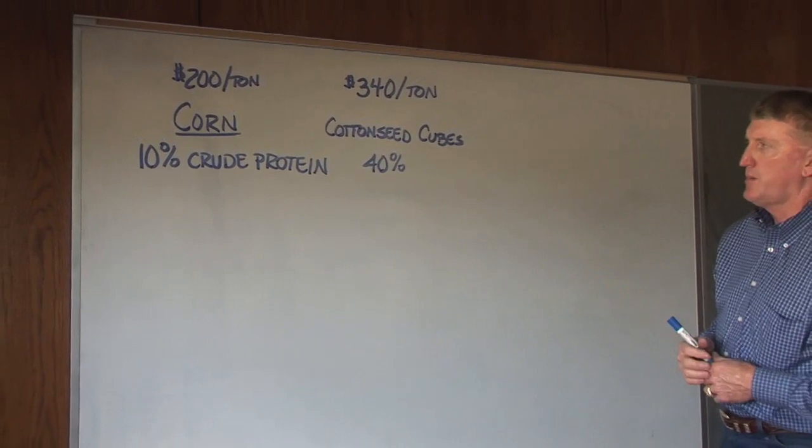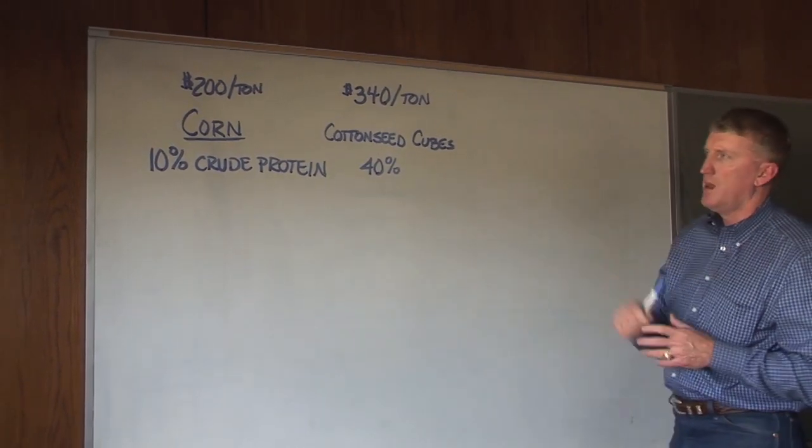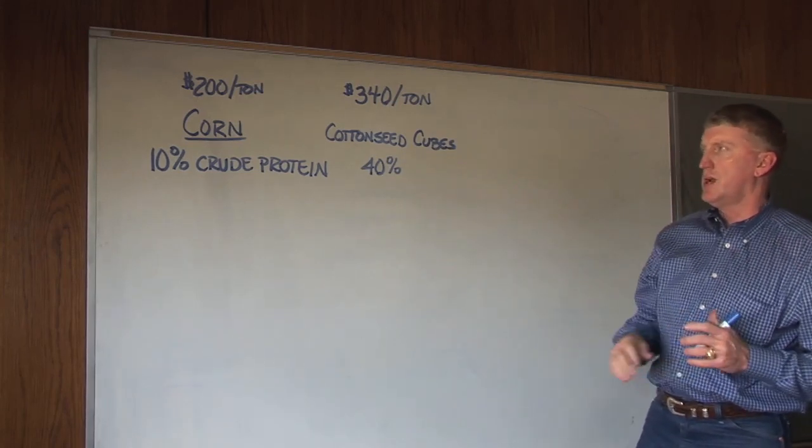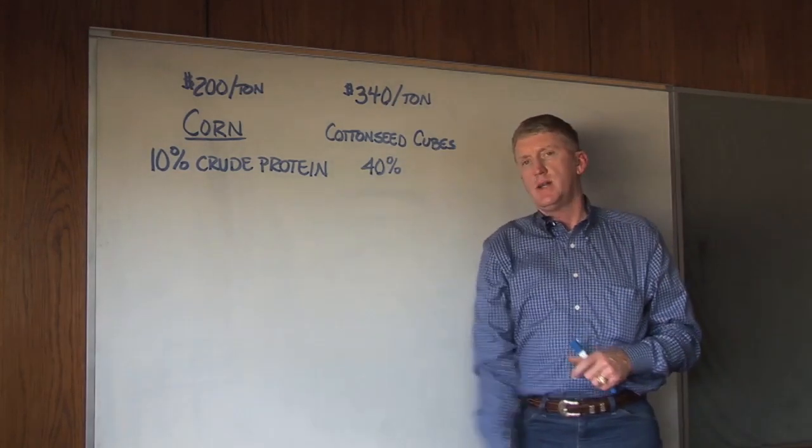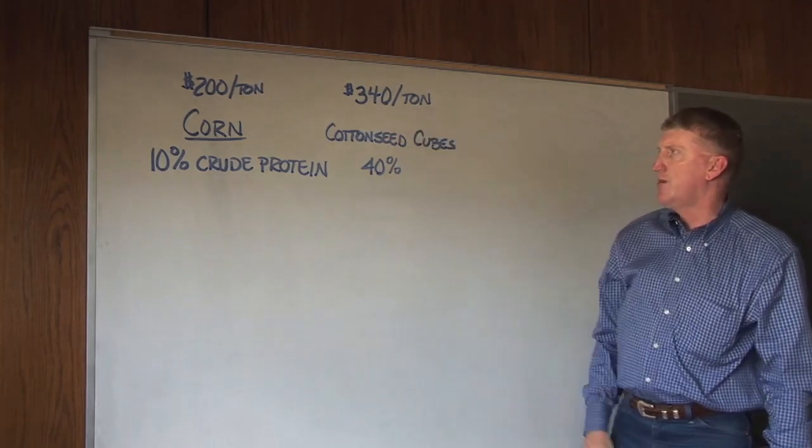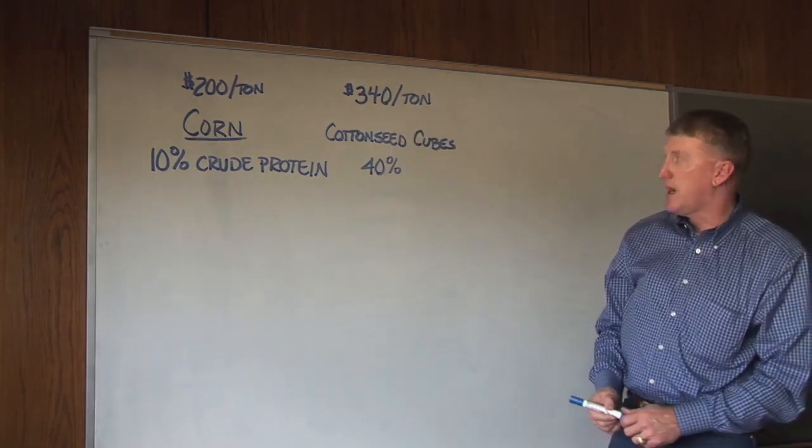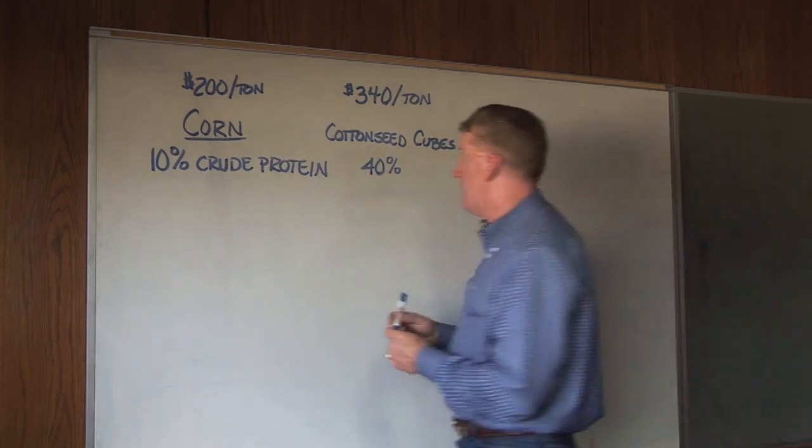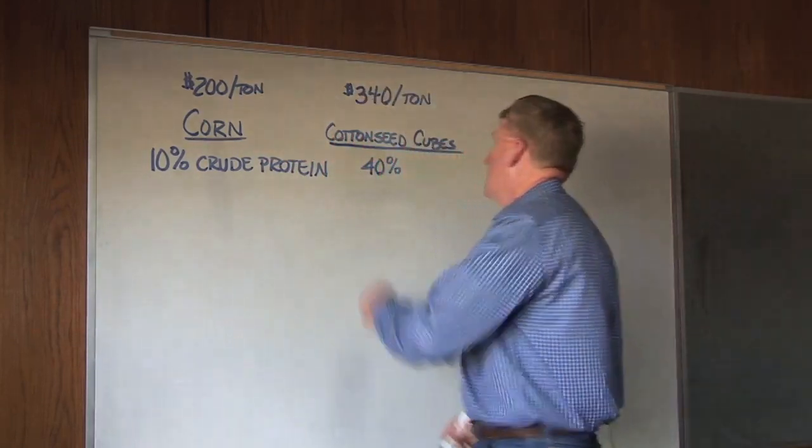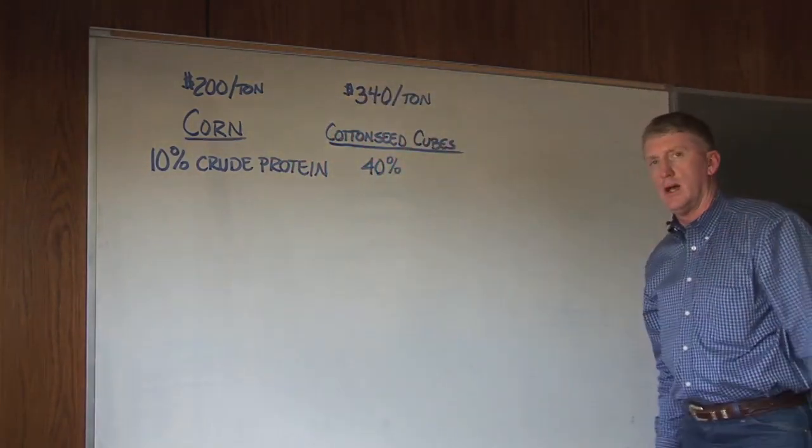So we've got two examples up here on the board that I just made up. Fairly real world prices. We've got whole shell corn at $200 a ton which is going to have about 10% crude protein on a typical dry matter basis. And then we've got on the other hand, cottonseed cubes that we put in here at about 40% protein on an as-fed basis. And we got those valued at $340 a ton.